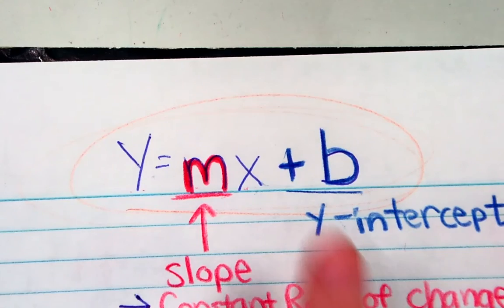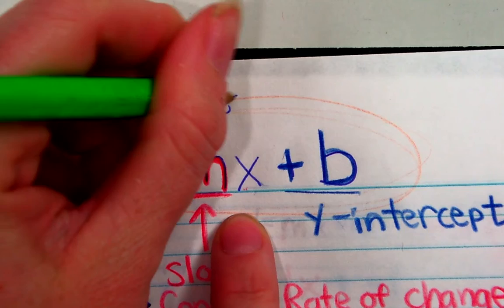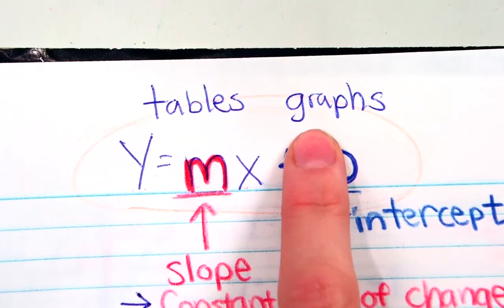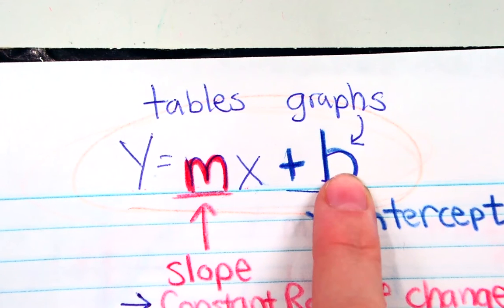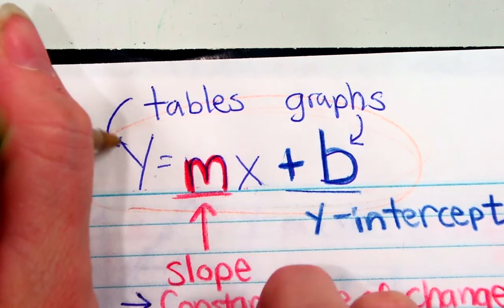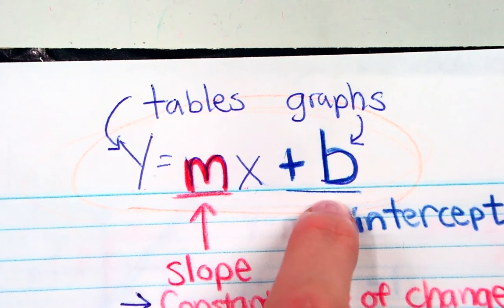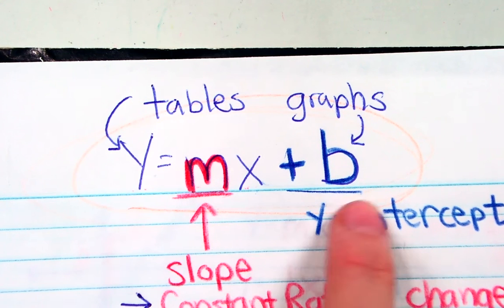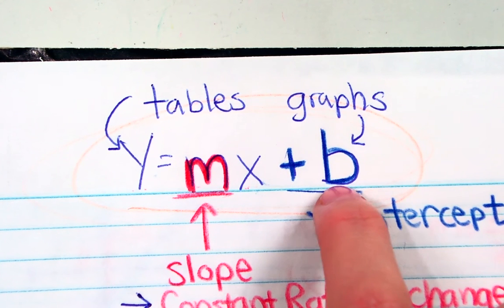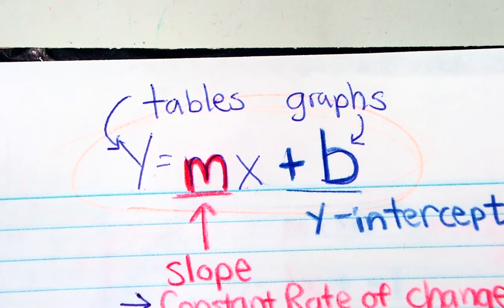This is a lot of information, so let me review quickly. You need to be comfortable converting between equation form, table, and graph. If I give you a graph, can you write the equation? Find the slope, find the y-intercept — yes, you can. If I give you a table, can you write the equation? Calculate the slope — change in y over change in x — and find the y-intercept — yes. If I give you the equation, can you make a graph? If you know the y-intercept and the slope, yes, you can.